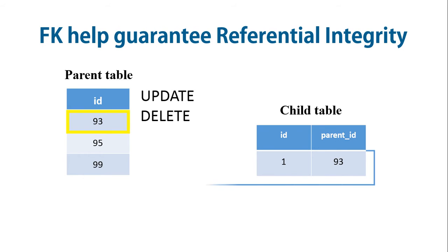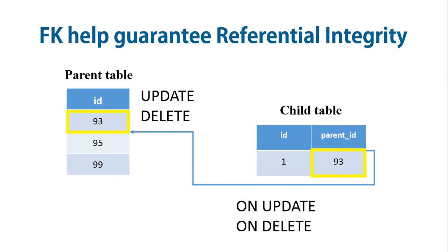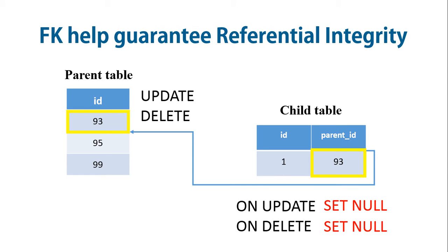When an update or delete operation affects a key value in the parent table that has matching rows in the child table, the result depends on the referential action specified using ON UPDATE and ON DELETE subclasses of the foreign key clause. MySQL supports four options: CASCADE — delete or update the row from the parent table and automatically delete or update the matching rows in the child table; SET NULL — delete or update the row from the parent table and set the foreign key column or columns in the child table to NULL.